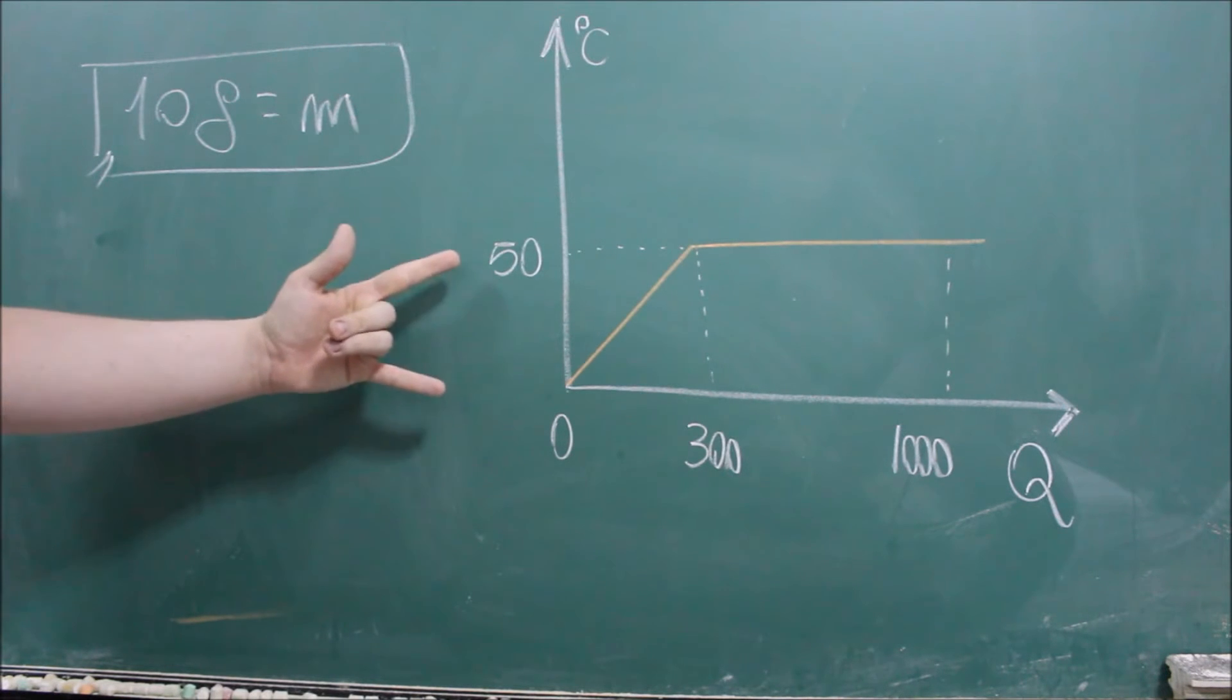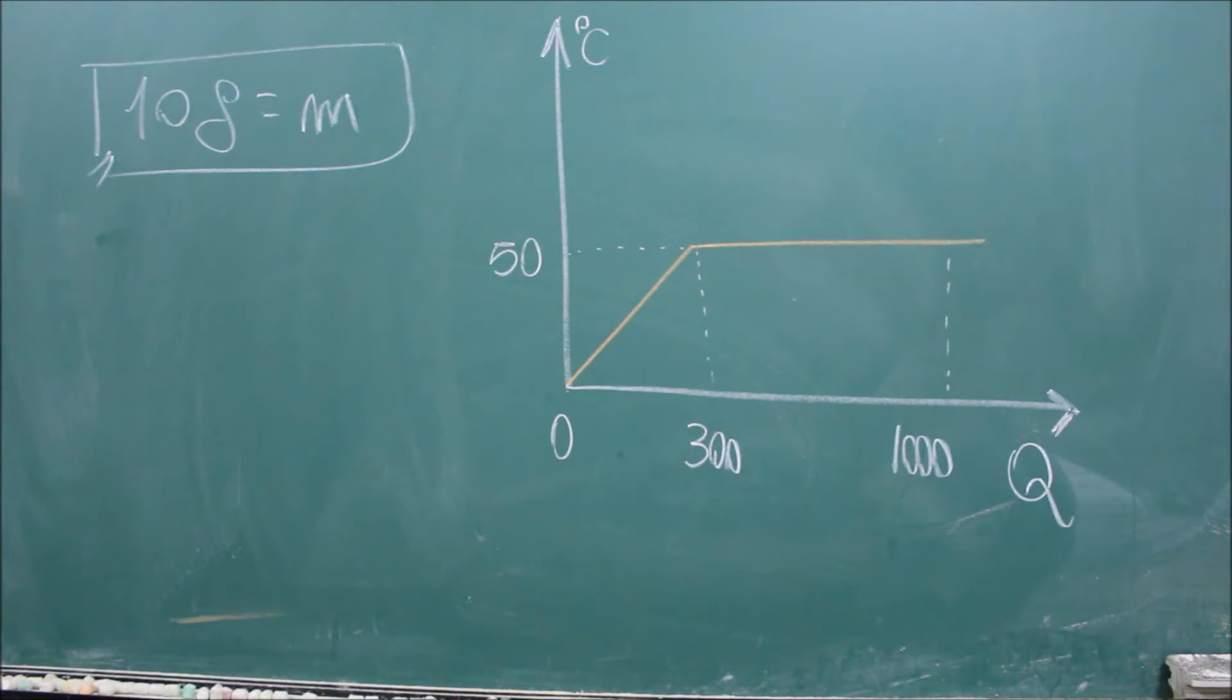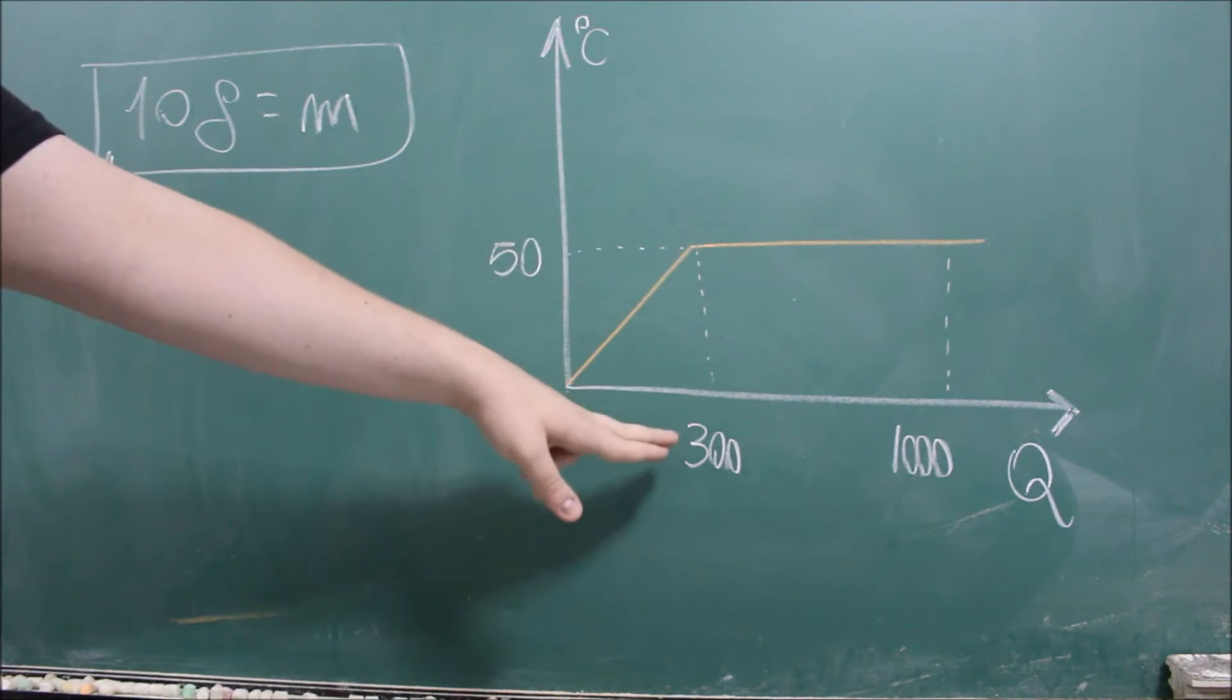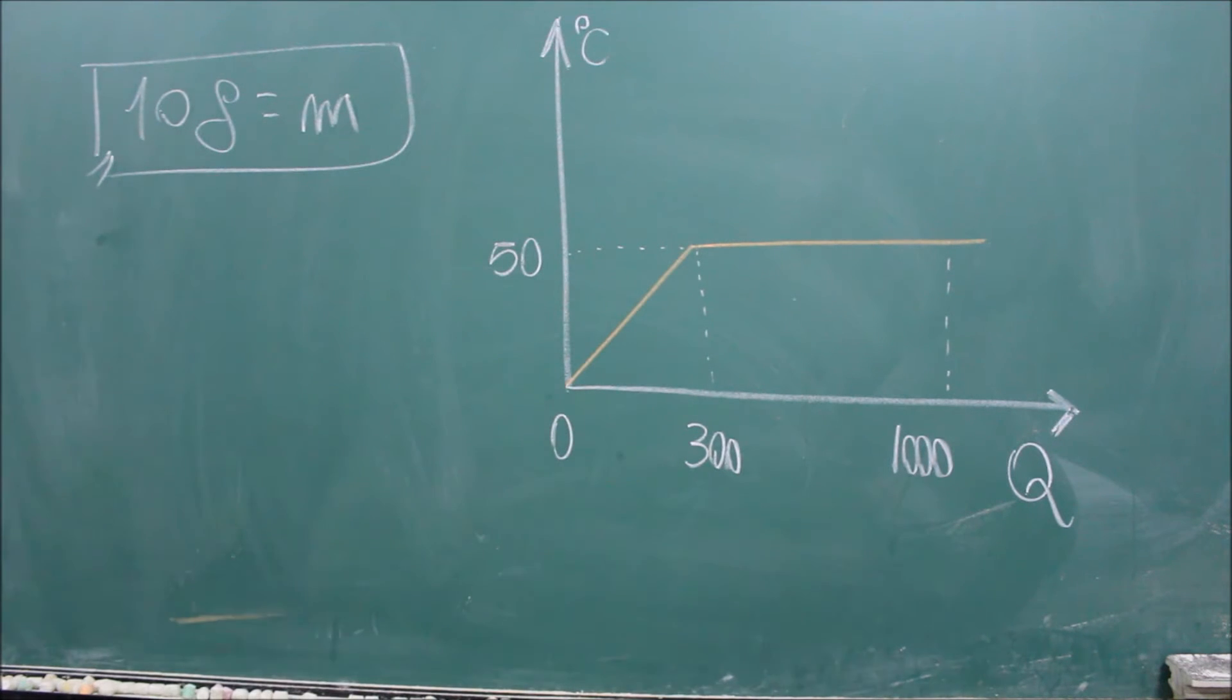Então aqui é o Q macete, Q=mc∆T, que é o calor específico sensível. Então o calor latente vai ser do 300 ao mil. É aqui que vai ter o calor latente. E é ali que a gente vai utilizar aquela formulinha para calcular o calor latente de mudança de fase.